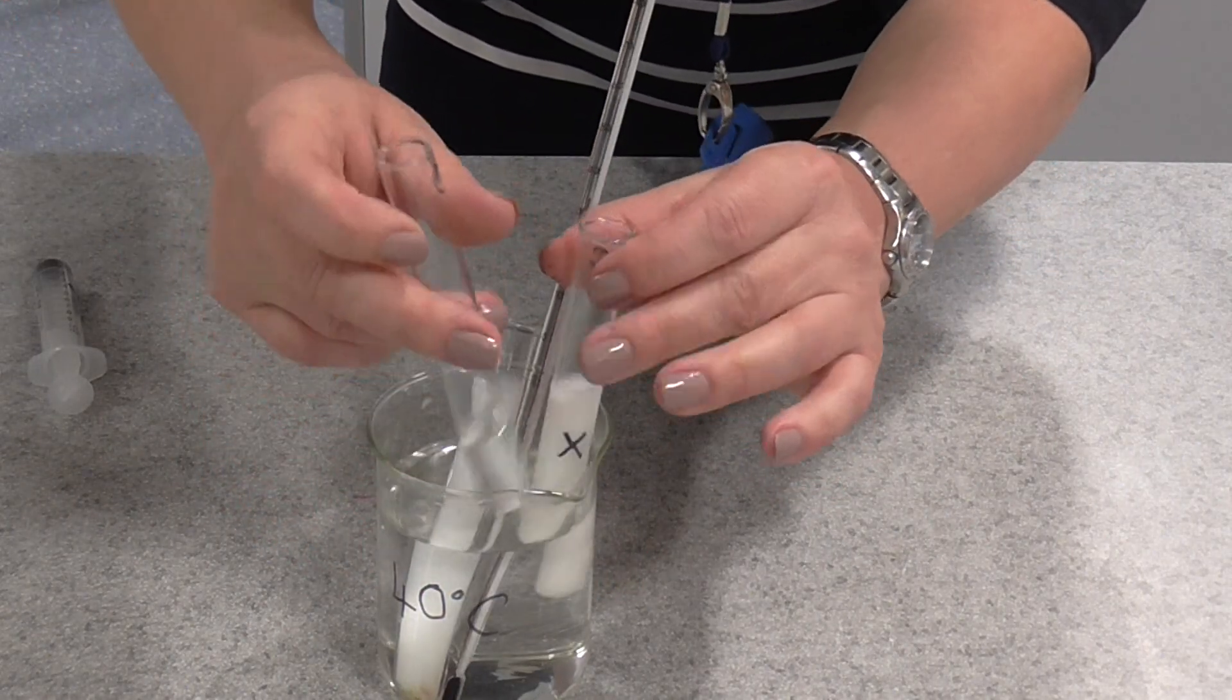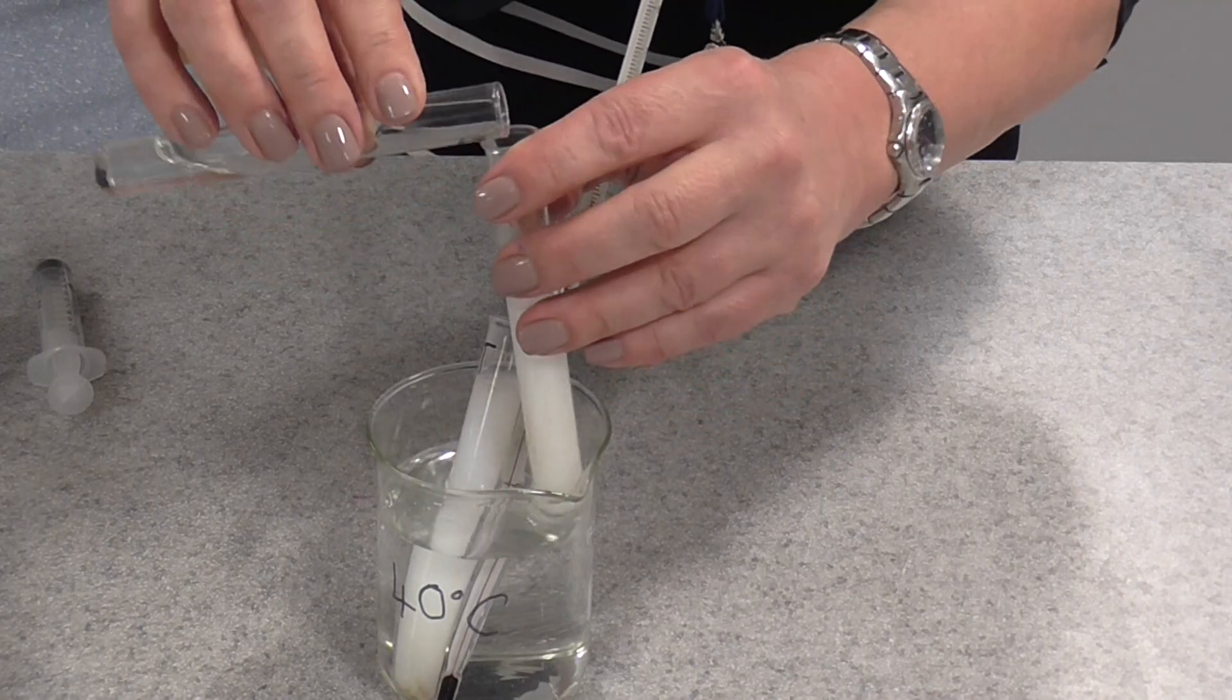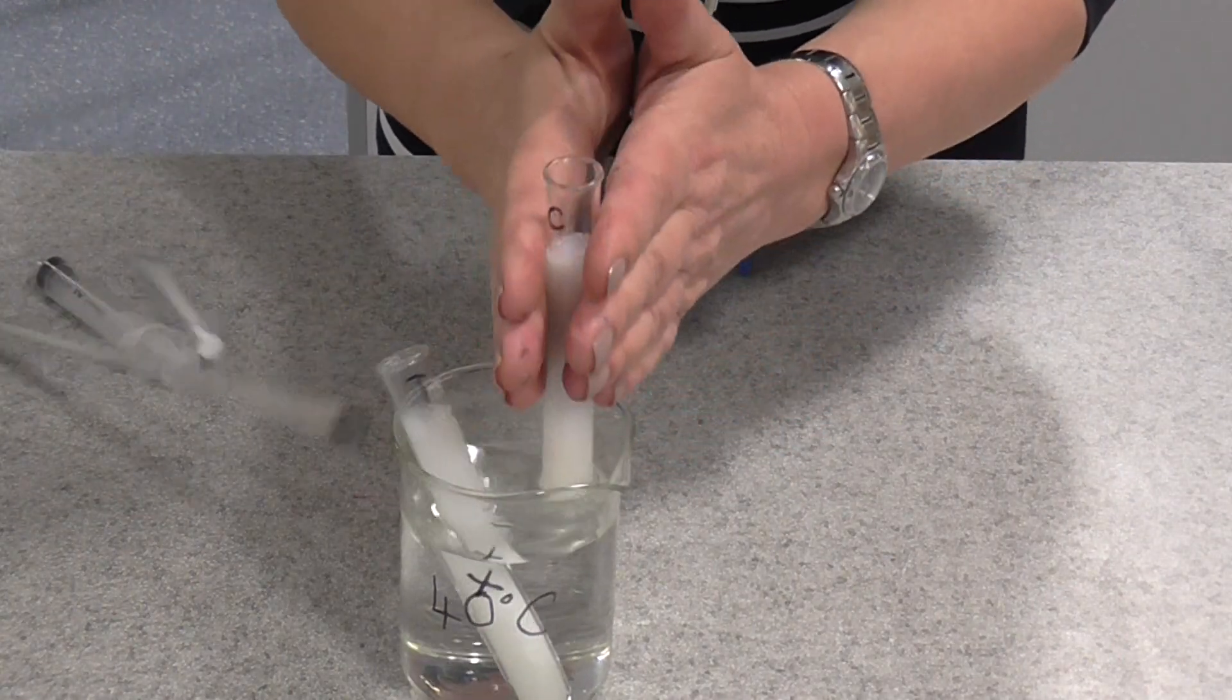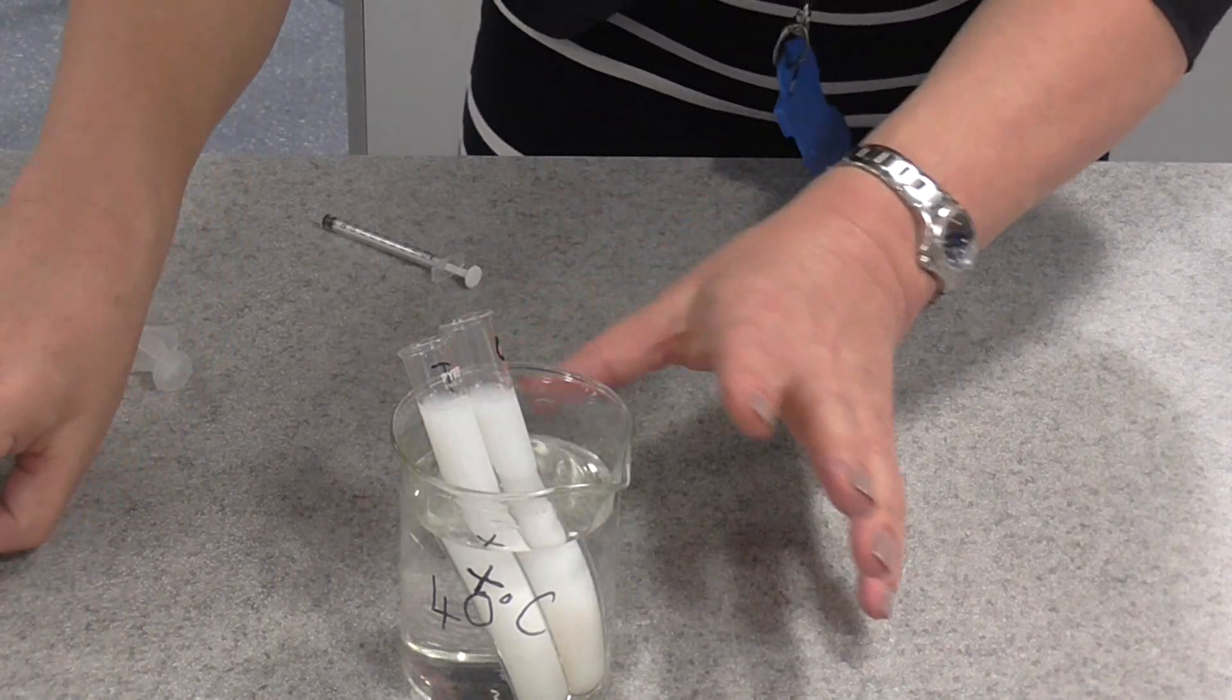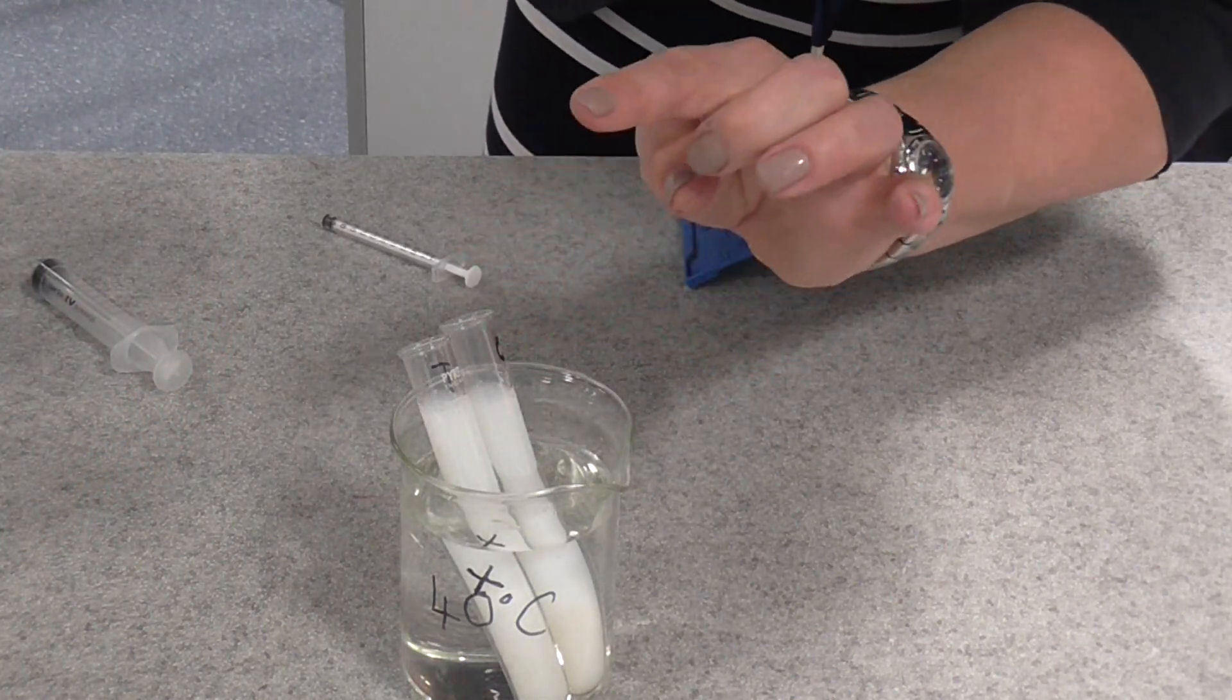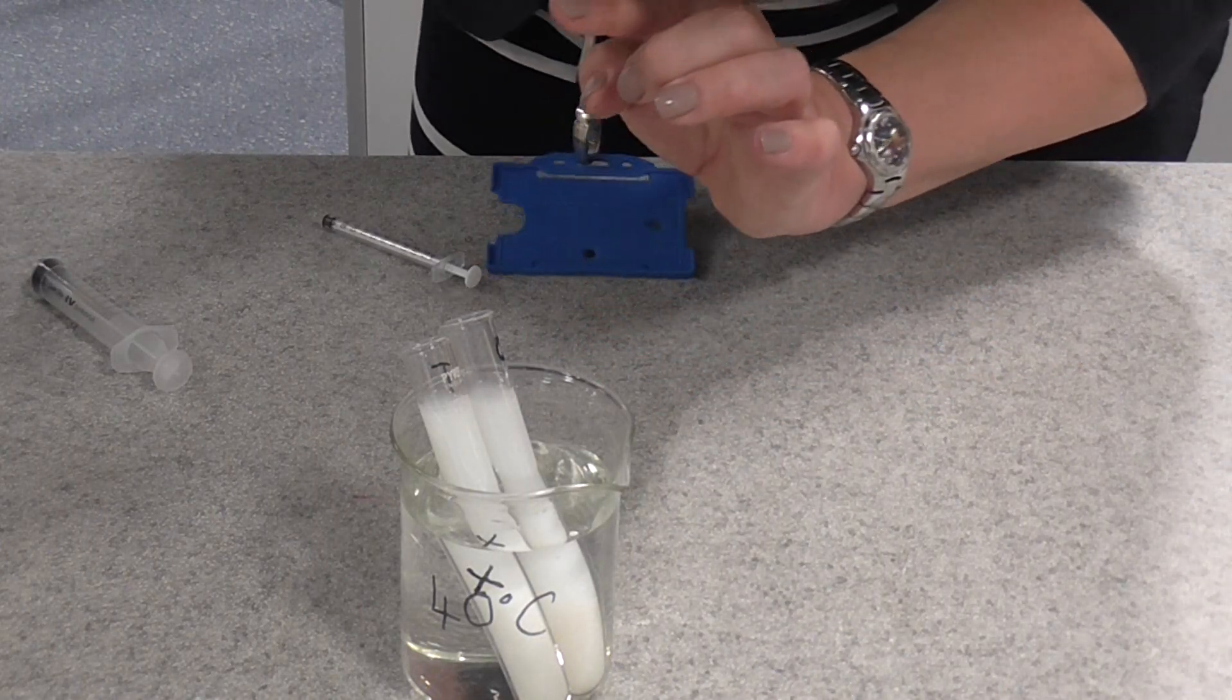Then we're going to do exactly the same with our control tube, which, remember, is exactly the same but without the trypsin enzymes. We're going to mix them, just roll it between your fingers to give it a little mix, and then you're going to leave them in the water bath. You need to start your timer immediately, as soon as you have mixed the enzyme and the contents. Start the timer.